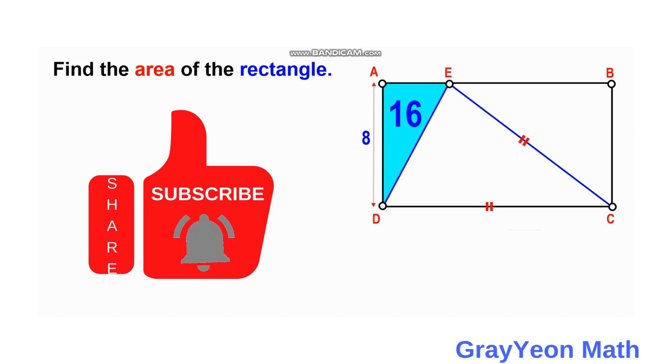We have this rectangle A, B, C, D, and a line is drawn from point D to point E on segment AB, forming this blue triangle with area of 16 square units, and from E also to vertex C.